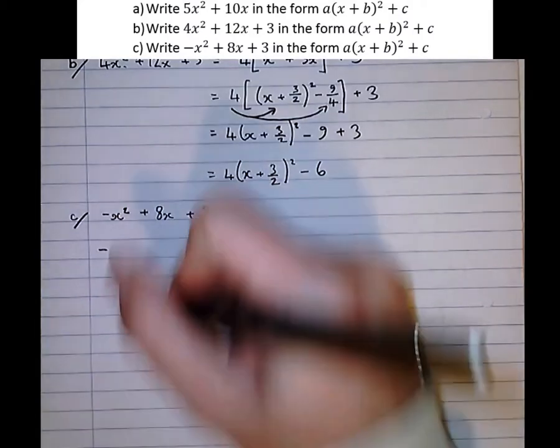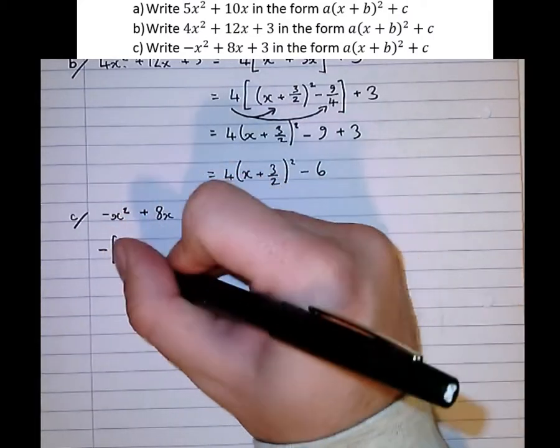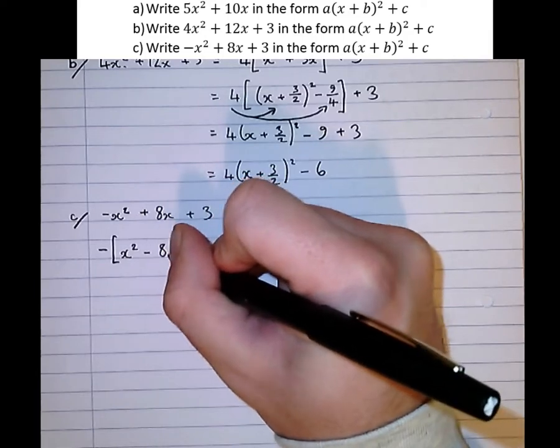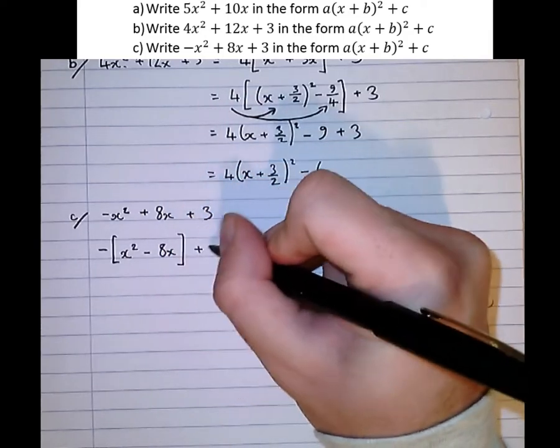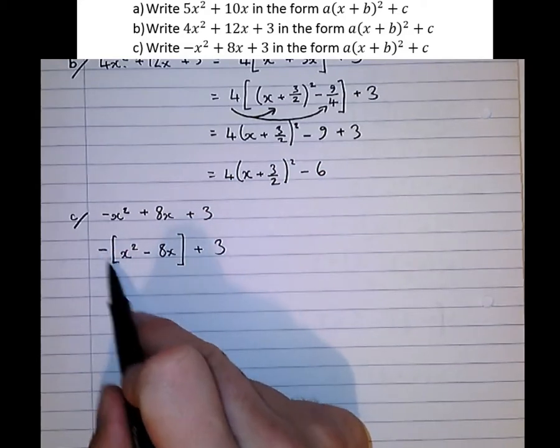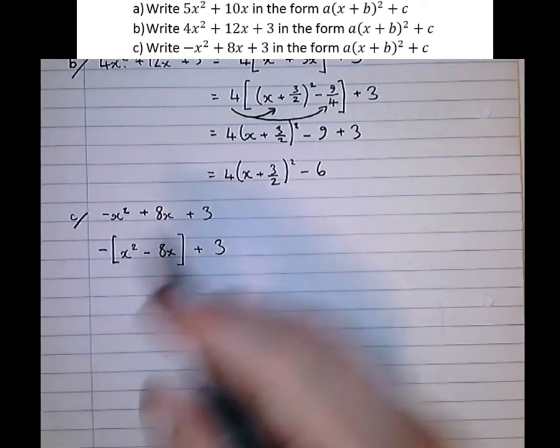So we take out a factor of minus from the first two terms. x squared minus 8x close brackets plus 3. So now we can see that that's minus x squared plus 8x. Same as the line before, which is good.